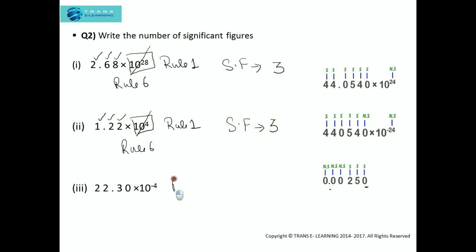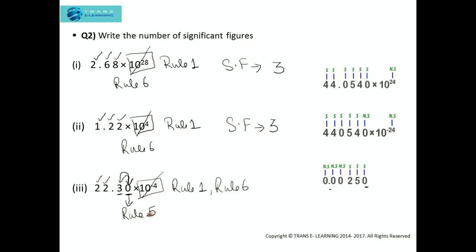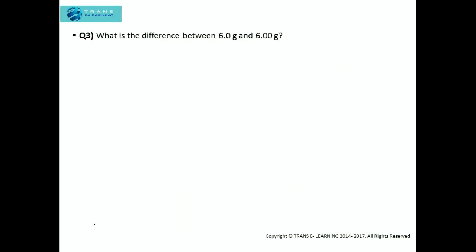Now this one. As per Rule 1, non-zero digits are considered significant. As per Rule 6, powers are not considered significant. Now what about this zero? As you can see, this is a decimal number, so when we have a decimal point the trailing zero — zero to the right of a non-zero digit in a decimal number — is considered significant as per Rule 5. So the number of significant figures in this number will be 1, 2, 3, 4. Now let's see the third question.